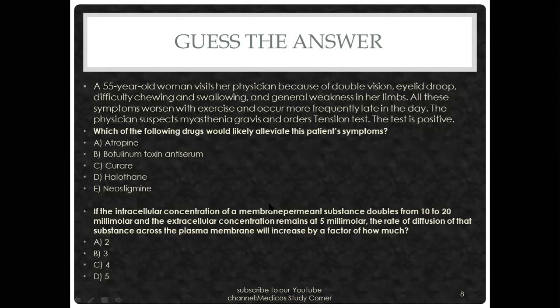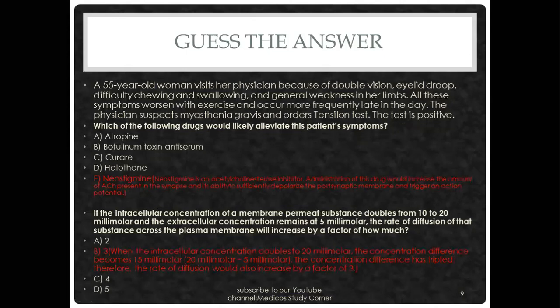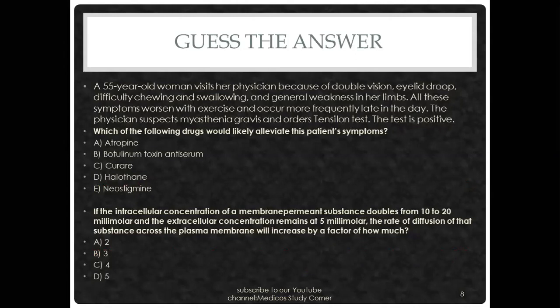We know this is a case of myasthenia gravis. To relieve the symptoms, we have learned about acetylcholinesterase inhibitors. Acetylcholinesterase breaks down acetylcholine, so we want to inhibit it. The answer is neostigmine, which is an acetylcholinesterase inhibitor. It allows more acetylcholine to remain in the synapse to depolarize the postsynaptic membrane. Other options like atropine, botulism antiserum, curare, and halothane would worsen symptoms.